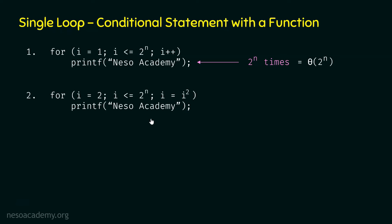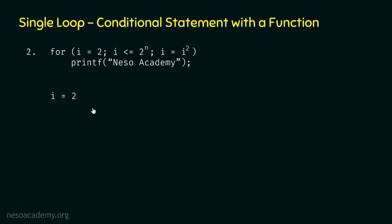Let's find the time complexity by calculating the frequency count of the innermost instruction. In the first iteration, i is 2. In the second iteration, i is updated to i squared, giving us 2 squared, which is 2 power 2. In the third iteration, we take the square of 2 power 2, multiplying the exponent 2 by 2 to get 2 power 4, which is 2 power 2 power 2.